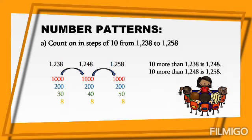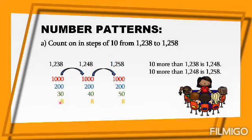Now we continue our lesson about number patterns. Count on in steps of ten from one thousand two hundred thirty-eight to one thousand two hundred fifty-eight. We are going to count by tens. Look at the digit in the tens place — we have three in the first number. We are going to add ten each time.